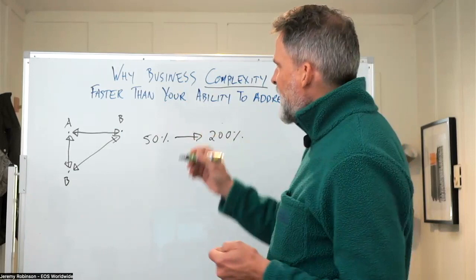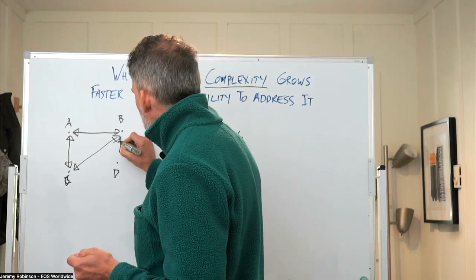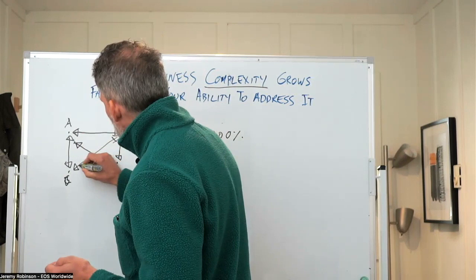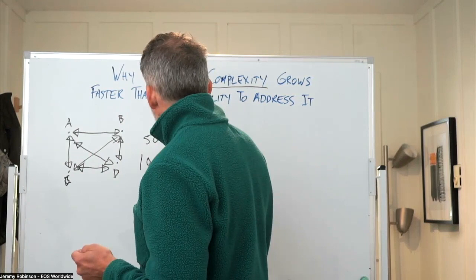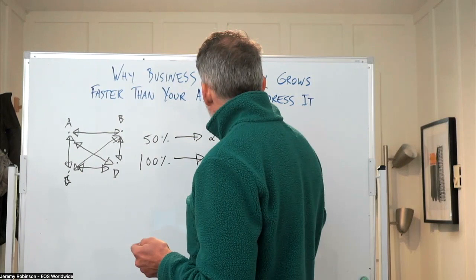Now, let's add a fourth person to this organization. You now have 12 lines of communication. So you have increased from two to four. You've increased your organizational size by 100%, but your complexity has gone up 500%.